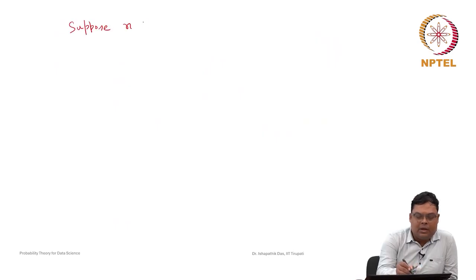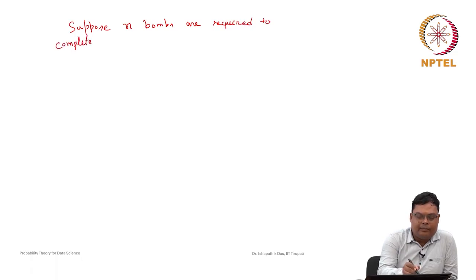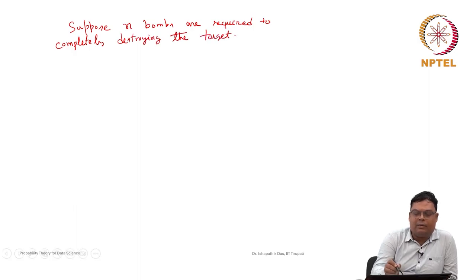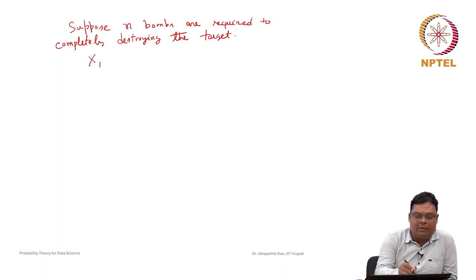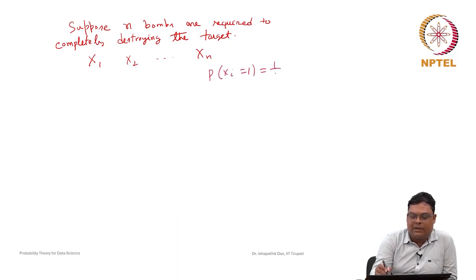Now, the question is: suppose N bombs are required to completely destroy the target. If we throw n bombs, the random variable can be represented by x1, x2, ..., xn. Each bomb xi is defined as having a 50 percent chance of striking the target, with probability equal to one half for i equal to 1 to n.